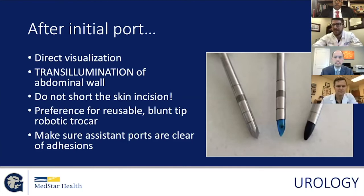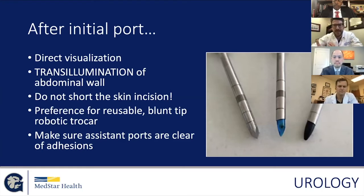Don't short the skin incision — even one millimeter can make a huge difference. If you're short the skin incision, you're pushing very hard and then the port goes through very quickly. If you're having trouble, just extend the skin incision. I do not like to use sharp-tip trocars — I use the reusable blunt tip trocars. There's less risk in my opinion of penetrating a vessel. Bladed trocars can also increase your risk of hernia in the future. Once all of your ports are there, make sure your assistant and robotic ports are clear of any adhesions or obstructions, because you're placing in and out different robotic instruments and you don't want an unseen bowel injury.